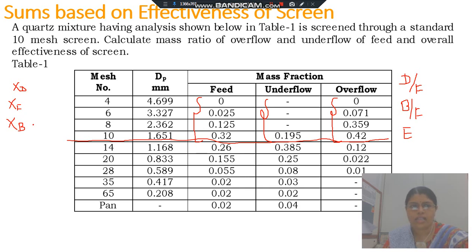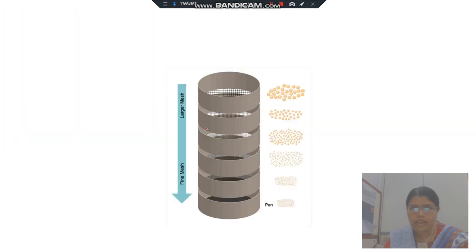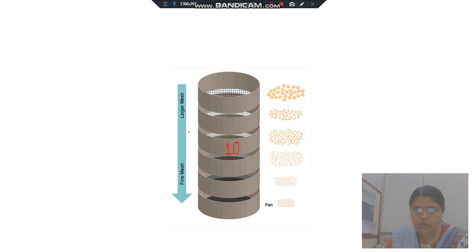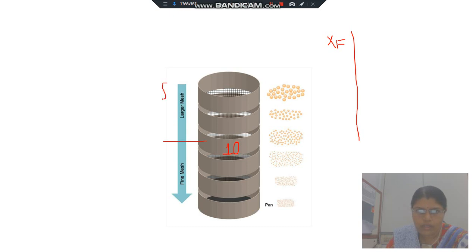Once we have XD, XF, and XB, we can easily find out D by F, B by F, and the effectiveness. To find out the effectiveness of the 10 mesh screen, I repeat the concept: consider a feed of 1 kg. I perform a screen analysis and note the fractions retained on each screen, giving me XF. Up to the 10 mesh screen, whatever weight I get is my overflow, and the material which passes through the screen is my underflow.